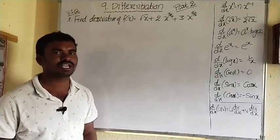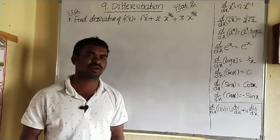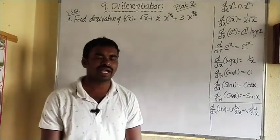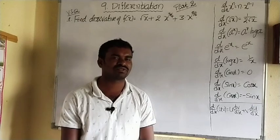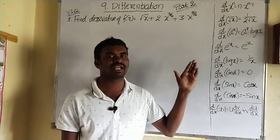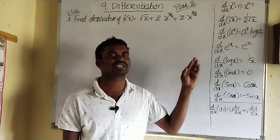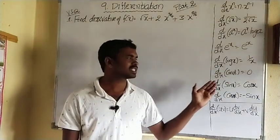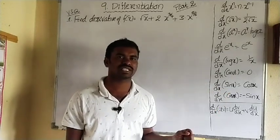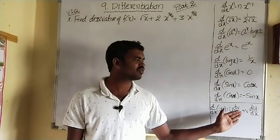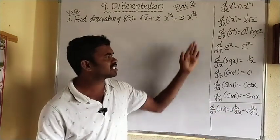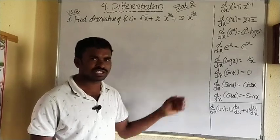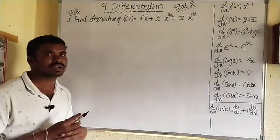In Part 1 we gave a brief introduction and discussed almost all 32 formulas. Today we are going to use those formulas: d/dx of x^n = n·x^(n-1), d/dx of √x = 1/(2√x), d/dx of a^x = a^x·log a, d/dx of e^x = e^x, d/dx of log x = 1/x, d/dx of a constant = 0, d/dx of sin x = cos x, d/dx of cos x = −sin x, and d/dx of u·v = u·(dv/dx) + v·(du/dx). Please pause and memorize these formulas before we solve the problems.